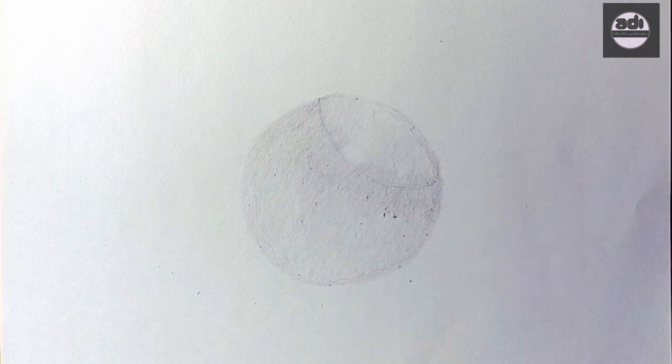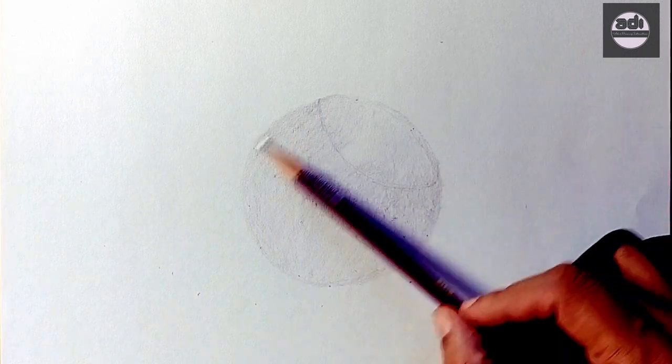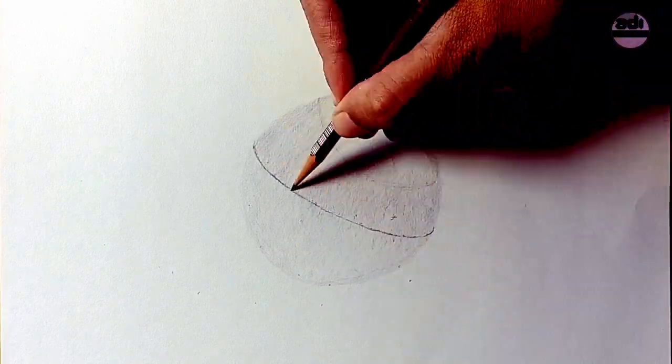You will then use the HB pencil to draw in the terminator or shadow line. You will do this exercise every day.